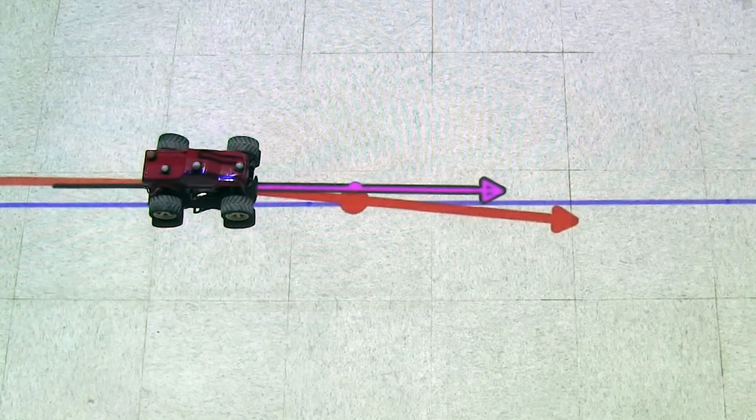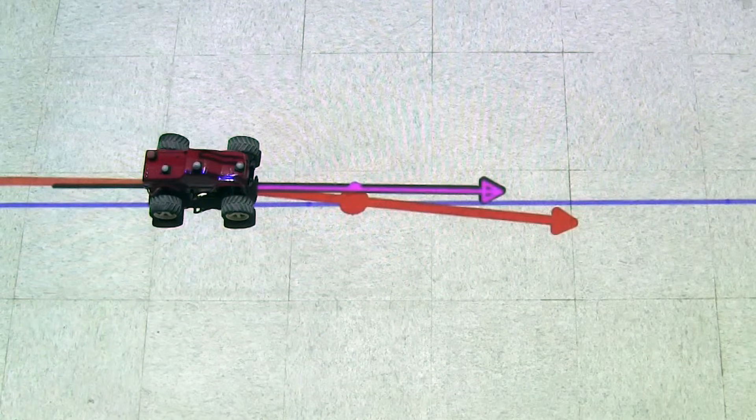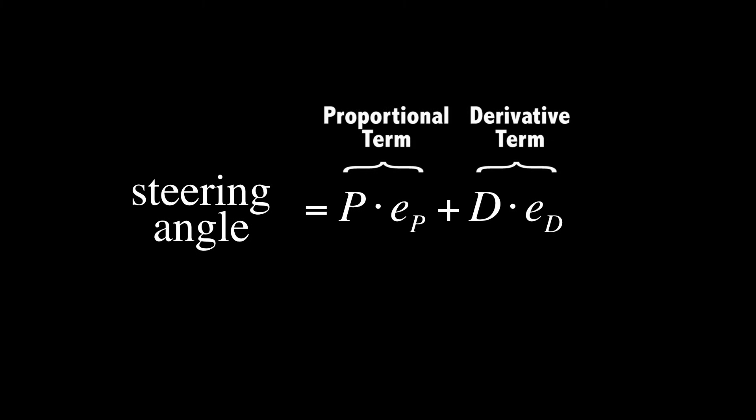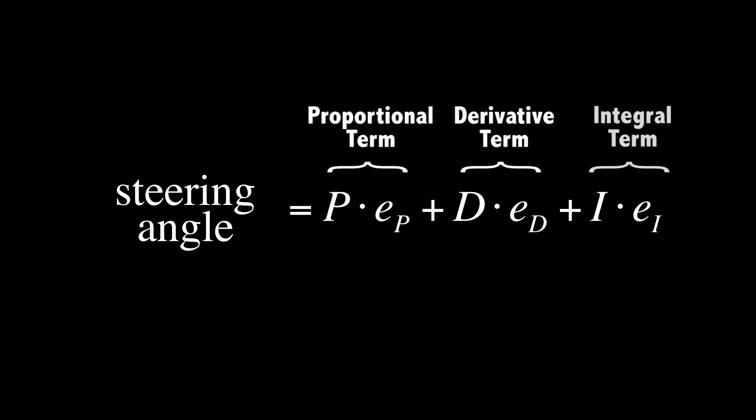As you can see, with the controller that has been described so far, the vehicle experiences a buildup of a lane offset, or a steady state error. One way to address this problem is to add yet another term called an integral term.